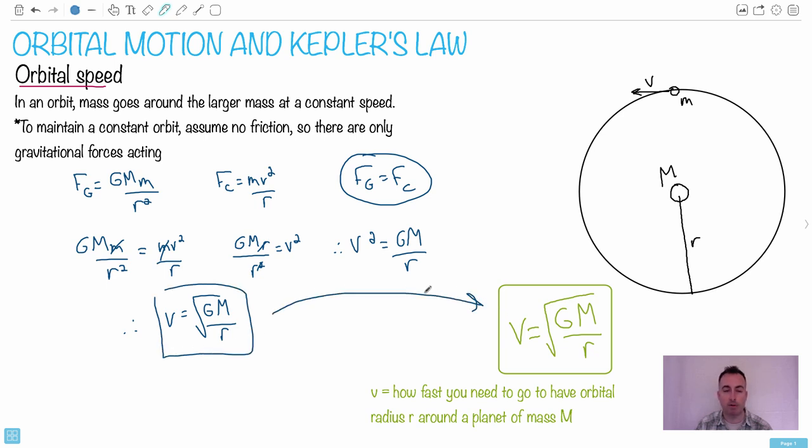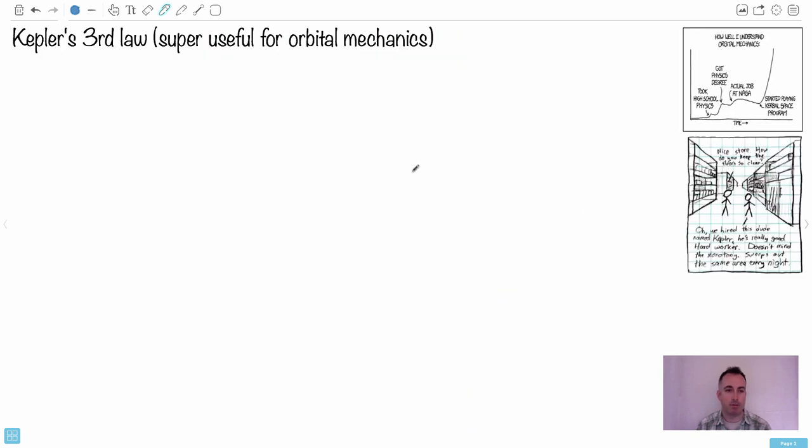So that's where we get this equation from. What this tells you is v is a linear speed. It's the actual linear speed needed, so it's how fast you need to go to have an orbital radius r around some object of mass M. So that's actually the orbital speed equation. It's kind of interesting because you can see you can set the different radius and find out what speed you need to have.